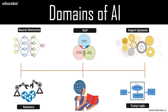In artificial intelligence, an expert system is a computer system that emulates the decision-making ability of a human expert. It is a computer program that uses AI technologies to simulate the judgment and behavior of a human or an organization with expert knowledge and experience in a particular field. Fuzzy logic is an approach to computing based on degrees of truth rather than the usual true or false Boolean logic. Fuzzy logic systems can take imprecise, distorted, and noisy input information.